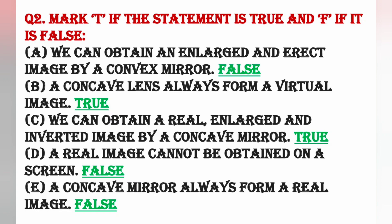D. A real image cannot be obtained on a screen — so it is false. Kyunki joh real image hai, woh hamesha screen par hi form hoti hai. E. A concave mirror always forms a real image — so it is false. Kyunki joh concave mirror hai, har case mein real image form nahi karta; jab object ko bahut paas rakha jata hai, toh woh virtual image bhi form karta hai.